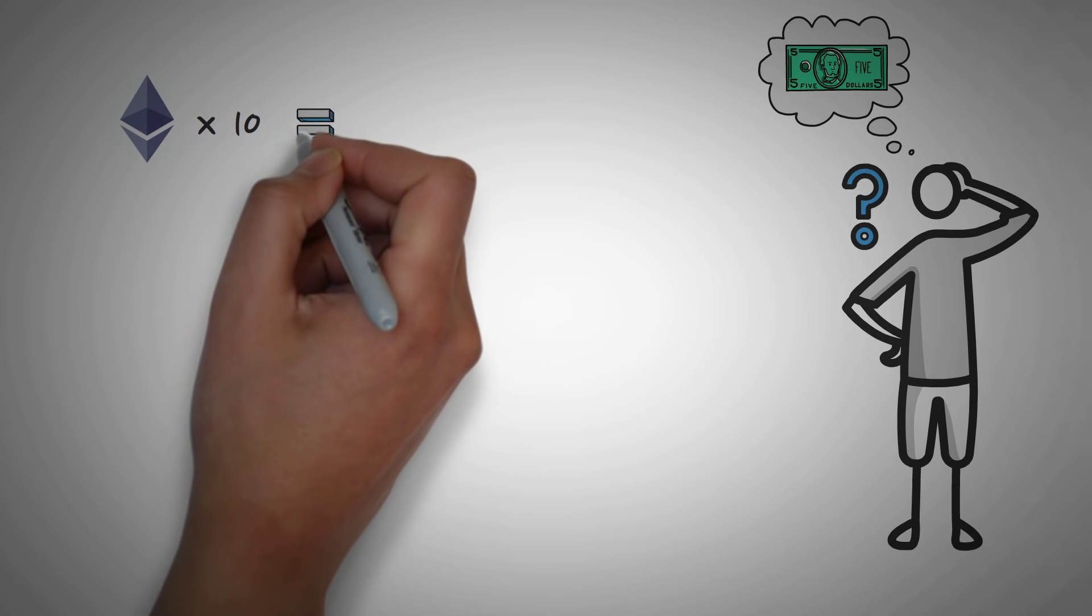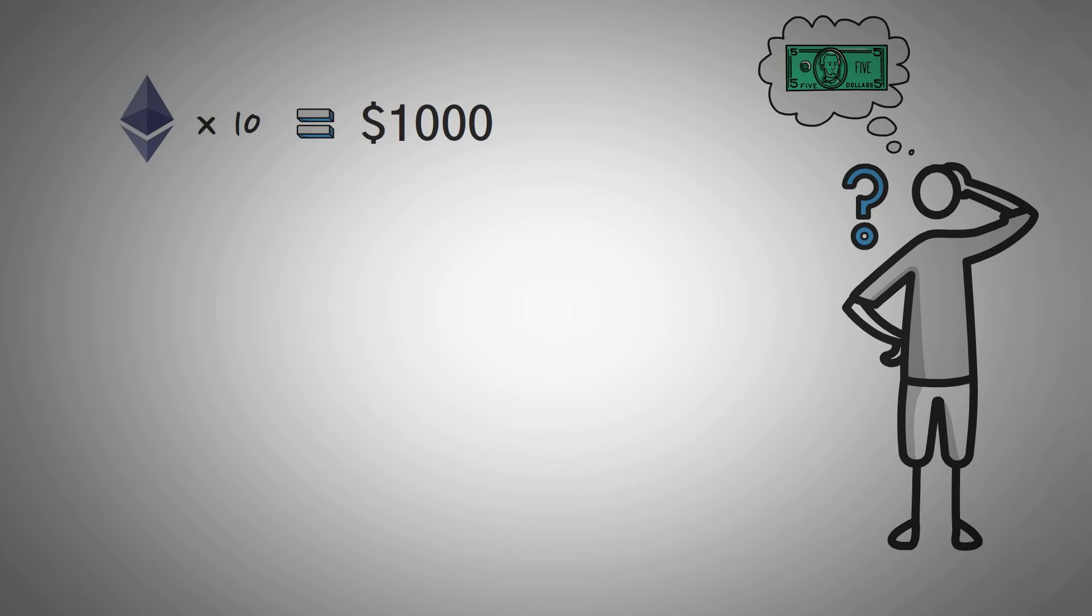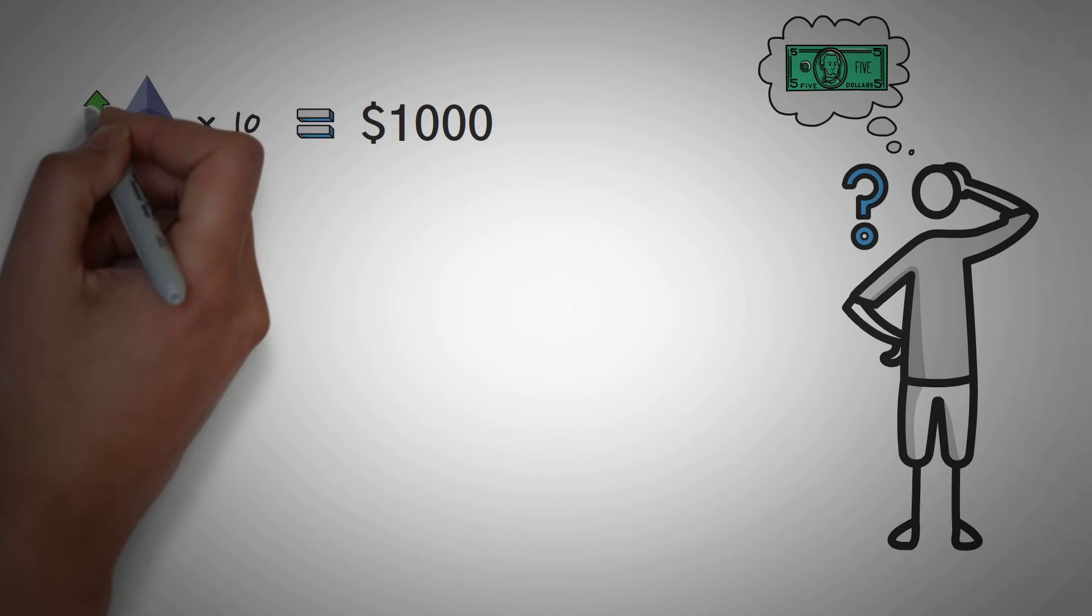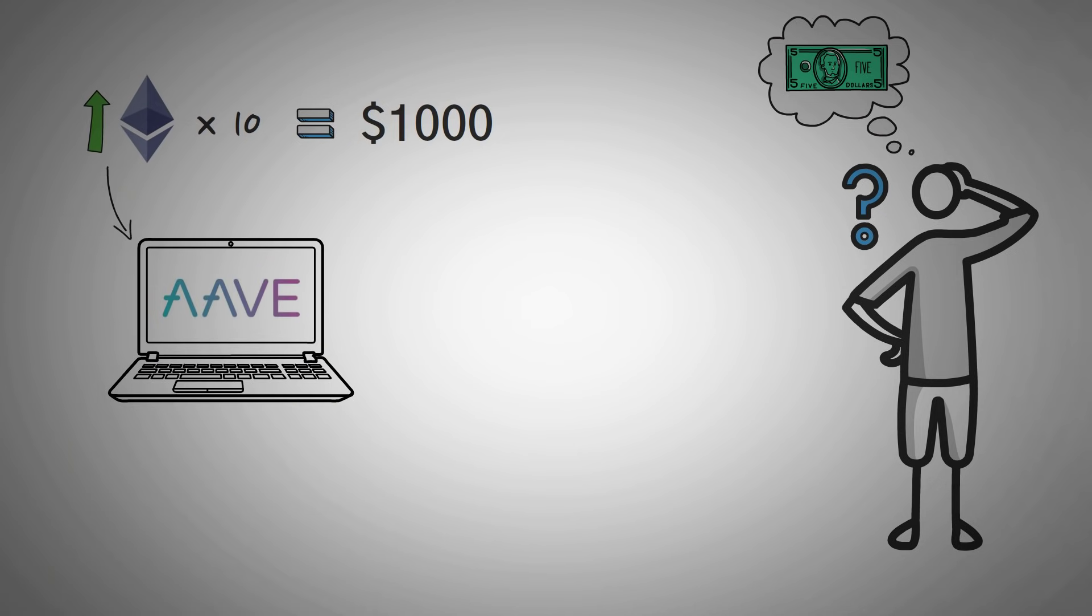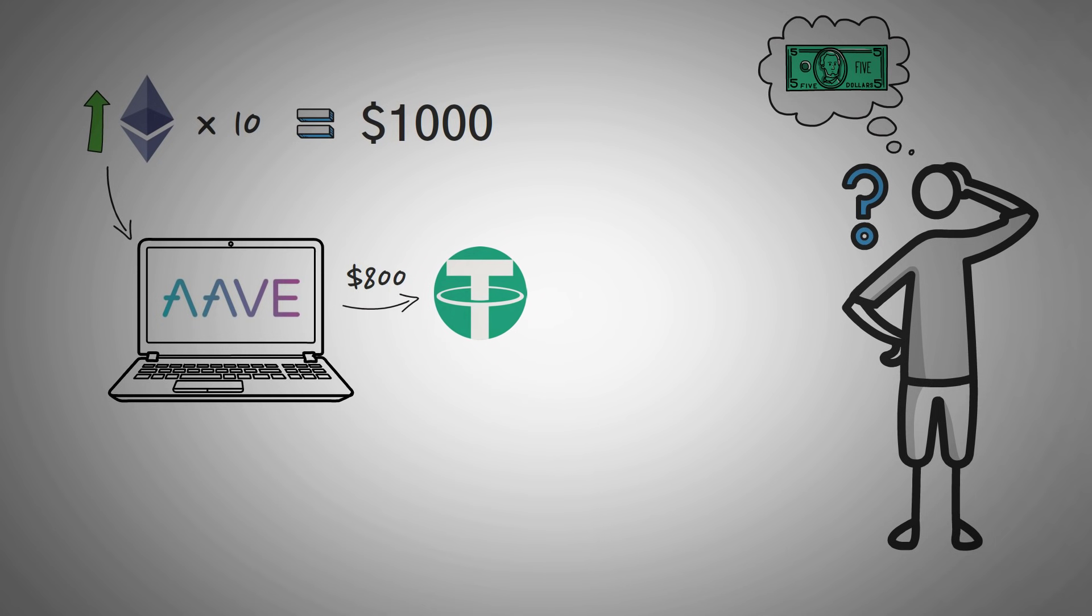Well, you're probably thinking in United States dollars. Say you have 10 Ethereum worth $1,000 because they're each worth $100, but you don't want to sell them because you greatly believe in the Ethereum project. So you put them up as collateral and borrow $800 worth of Tether, which is a stable coin pegged to the United States dollar.